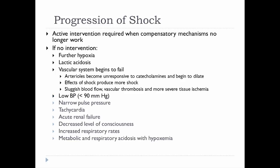Blood pressure continues to fall with a narrowing pulse pressure. The heart tries to compensate by increasing heart rate, resulting in tachycardia. The kidneys don't have enough pressure to filter the blood, leading to acute renal failure. Lack of oxygen to the brain causes decreased levels of consciousness. Respiratory rate increases in an attempt to get oxygen into the blood. With buildup of CO2, you can end up with both metabolic and respiratory acidosis. That concludes our discussion of hypertension and the progression of shock, ending our video lessons on the cardiovascular system.